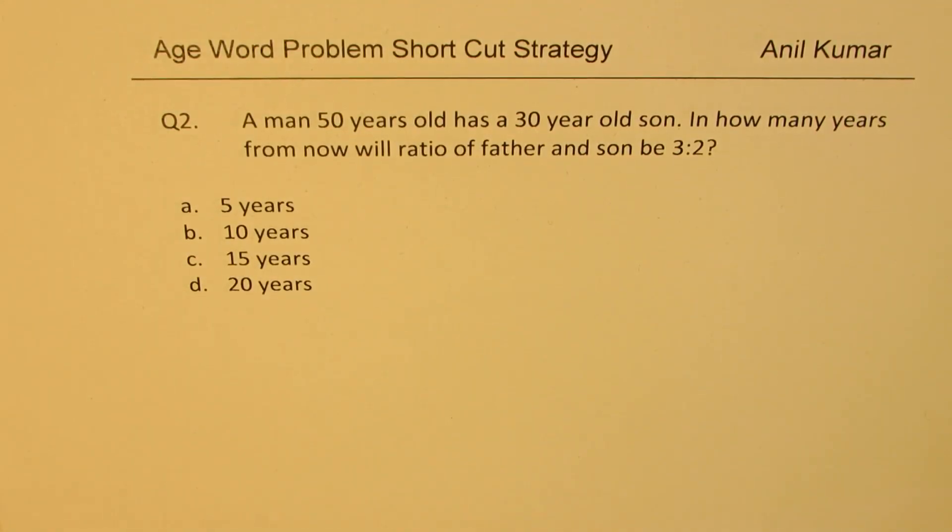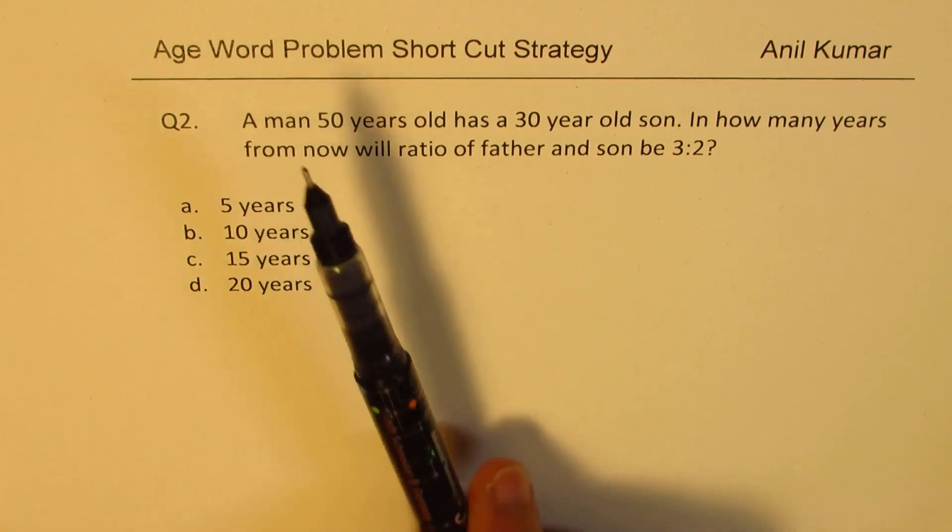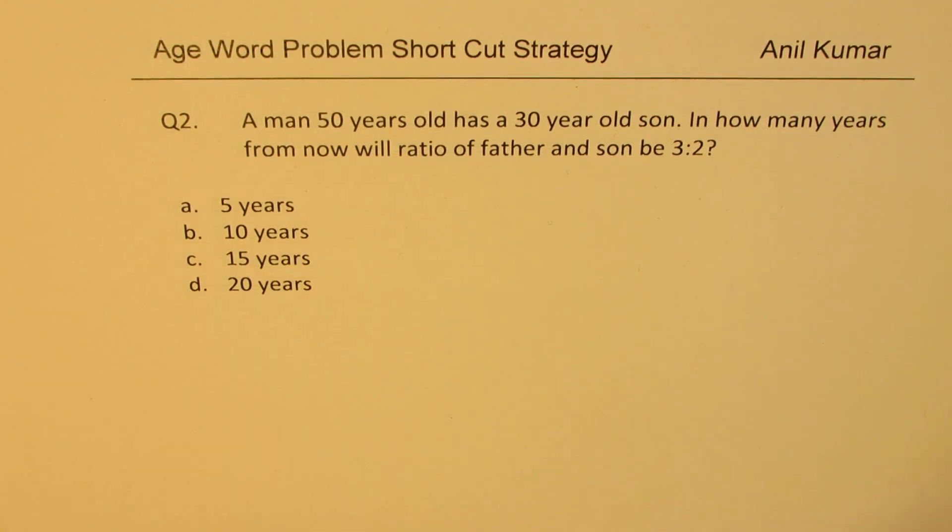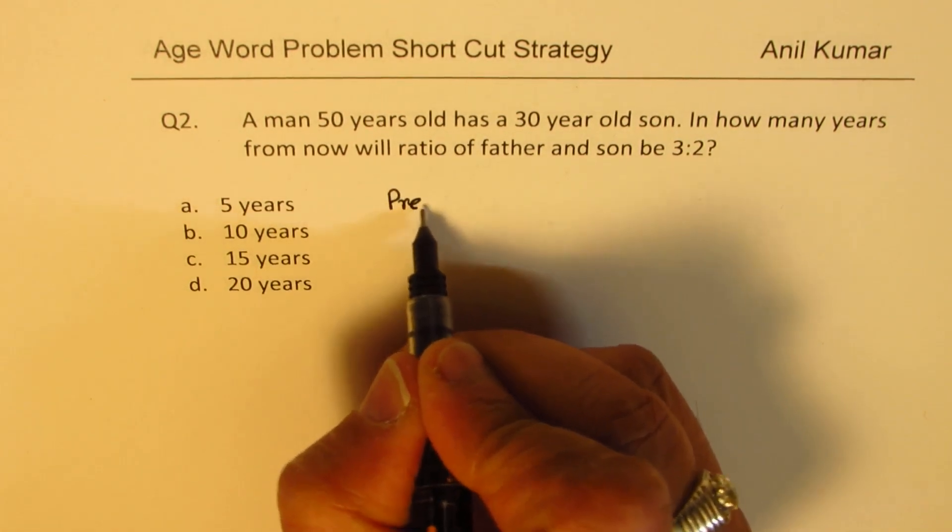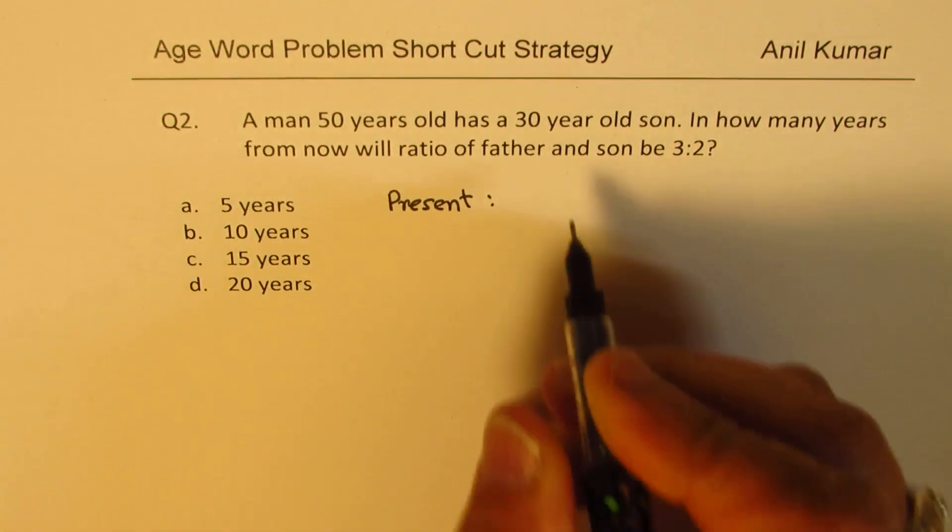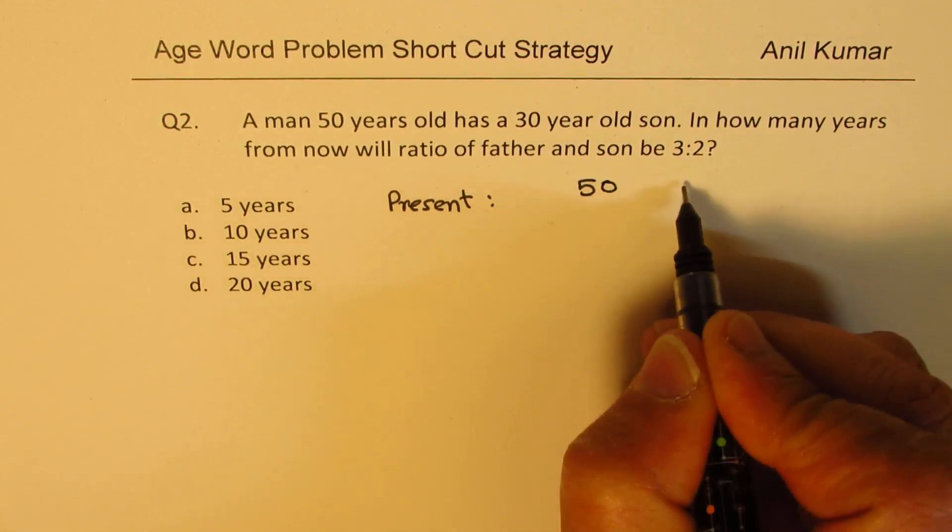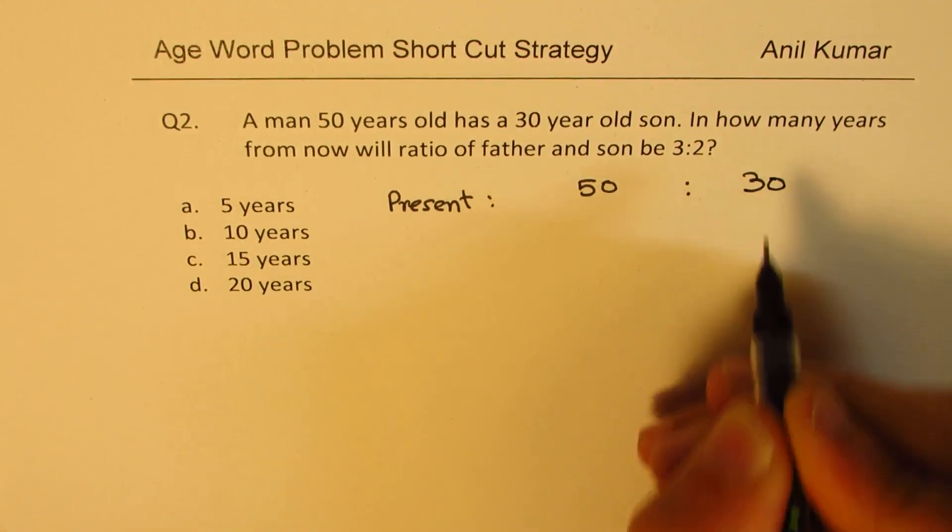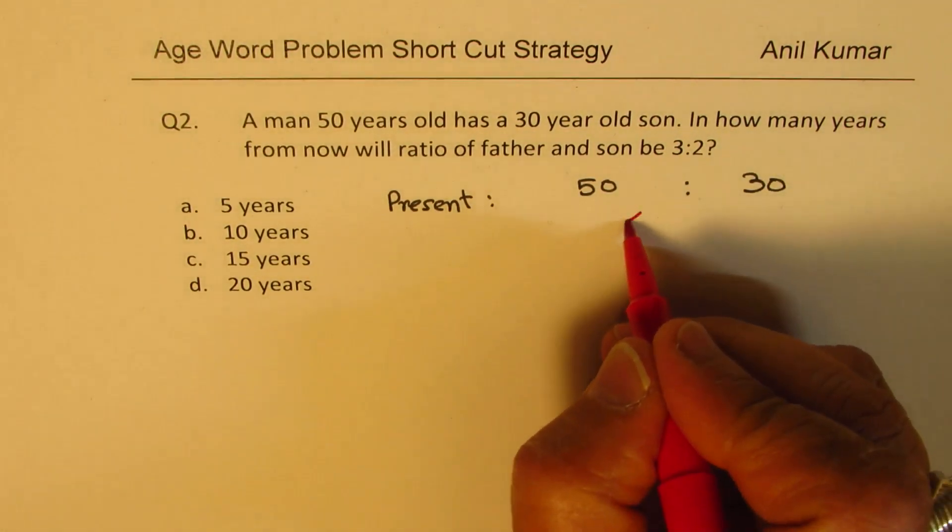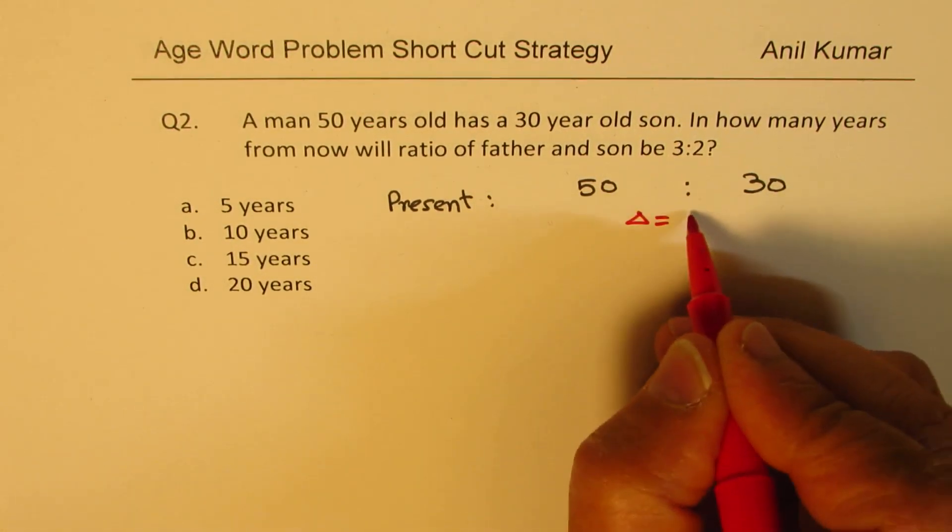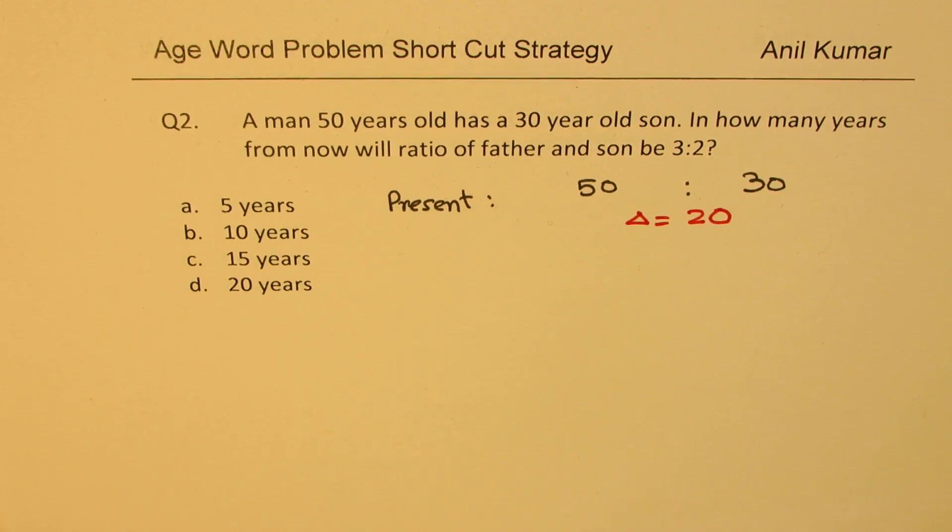Let's look into more examples. A man 50 years old has 30 year old son. So we are saying present 50 and the son is 30. So immediately, we have to now look for difference. So the difference between them is 20.